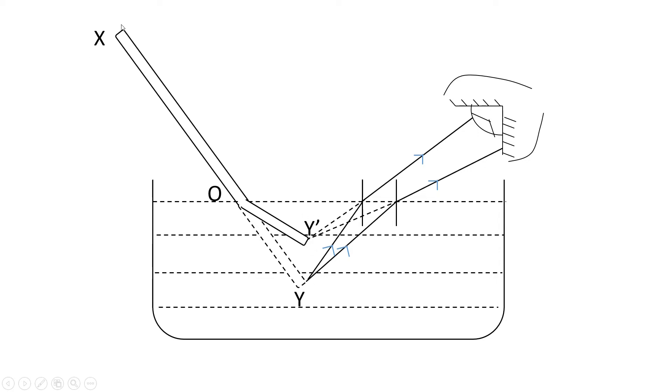This means the length of the stick is XOY, but it appears to be XOY dash. It appears bent and shortened. The reason behind this is simply the refraction of light.